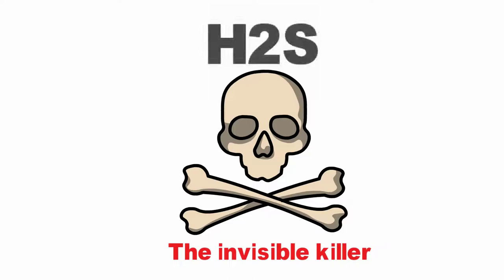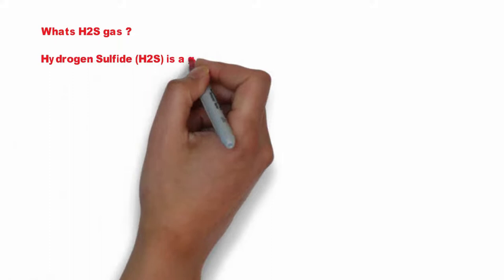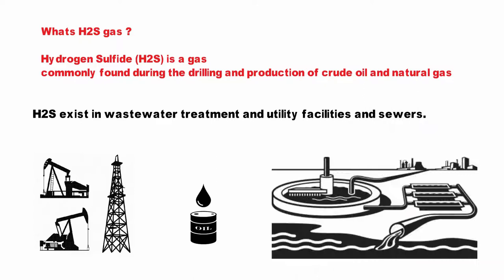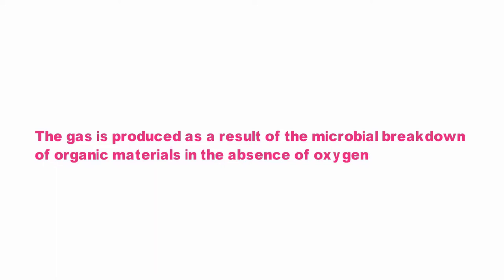Hydrogen sulfide H2S is a gas commonly found during the drilling and production of crude oil and natural gas. H2S also exists in wastewater treatment and utility facilities and sewers. The gas is produced as a result of microbial breakdown of organic materials in the absence of oxygen.